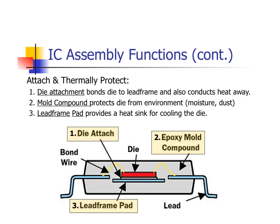Another major function of the IC package is to provide mechanical and thermal attachment and protection. Specifically, the die is attached to the lead frame with thermally conductive materials, allowing heat generated during use to be conducted away. Second, epoxy mold compound is used to encapsulate the IC. Epoxy is strong, lightweight, electrically insulating, and resists moisture, dust, and other chemicals used in fabrication. The third component is the lead frame pad, which is usually part of the lead frame structure but is isolated electrically. Because it's made of thermally and electrically conductive metal—usually copper—it acts as a heat sink to thermally protect the silicon die from overheating in use.